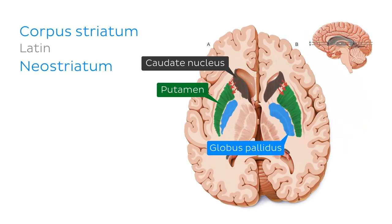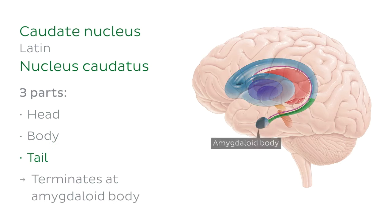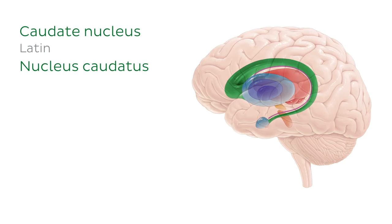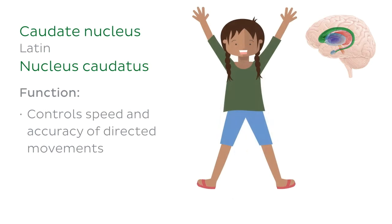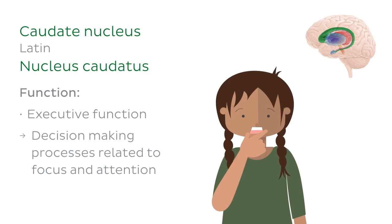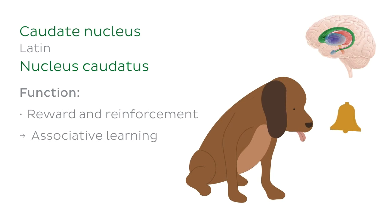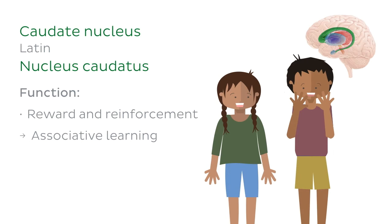Now let's look at some of the finer details of each individual nucleus, beginning with the caudate nucleus. This long and lanky C-shaped structure can be divided into three parts: a head, body, and tail, which terminates at the amygdaloid body — which is not part of the caudate nucleus. The head is the anterior-most portion of the structure. The caudate nucleus is perhaps one of the most critical members of the basal ganglia due to its long list of critical functions. Firstly, it plays an important role in controlling the speed and accuracy of directed or voluntary movements. It's also involved in executive function, helping guide our brain through decision-making processes related to focus and attention. This structure has an important role in reward and reinforcement, and is a system involved in associative learning, where an action becomes linked to a certain response. Studies have also linked the caudate nucleus to our emotions, notably our responses to visual beauty and attraction.